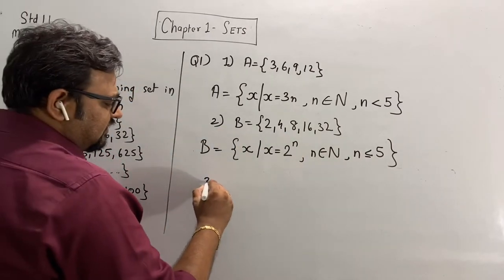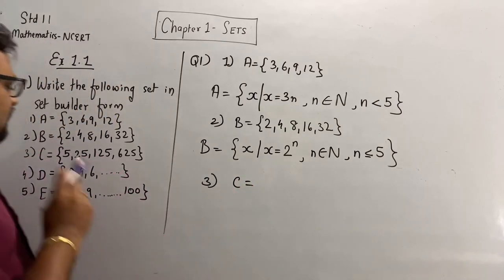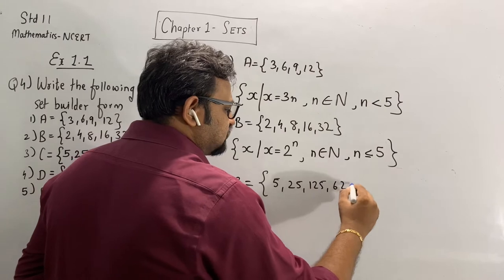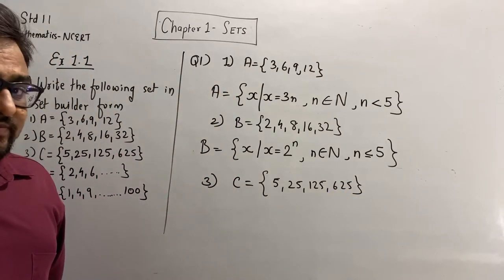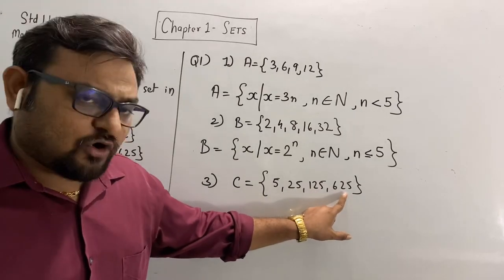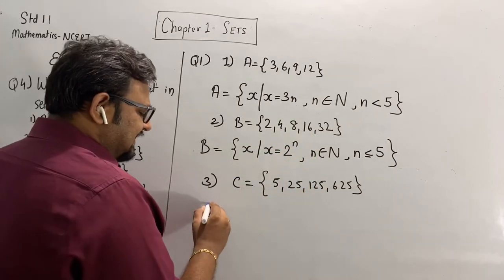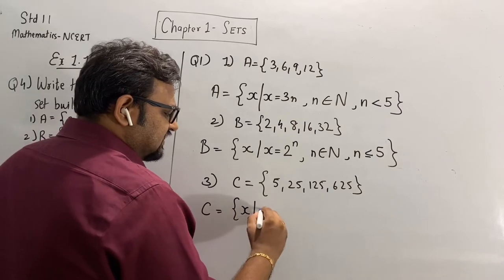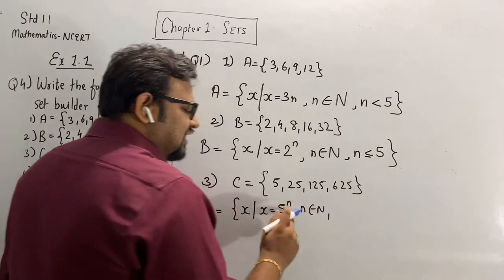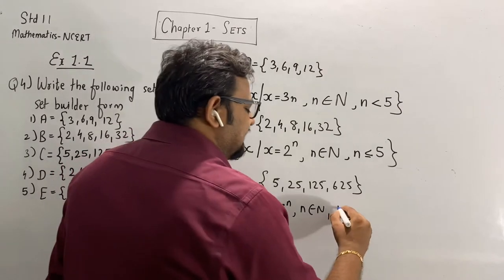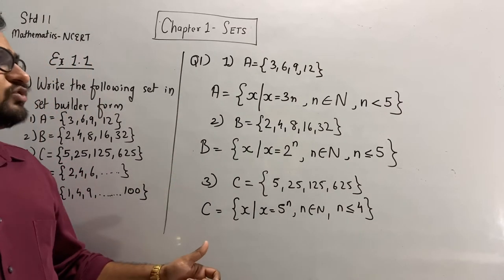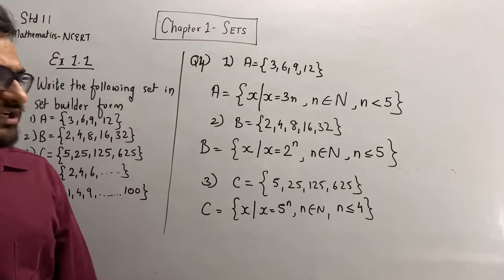The third one: C = {5, 25, 125, 625}. It seems similar to question number two — it's 5¹, 5², 5³, 5⁴. Just like before it was 2 raised to a power, here it is 5 raised to a power. So it will be: C = {x such that x = 5ⁿ}, where n belongs to natural numbers and n is less than or equal to 4, or equivalently less than 5.